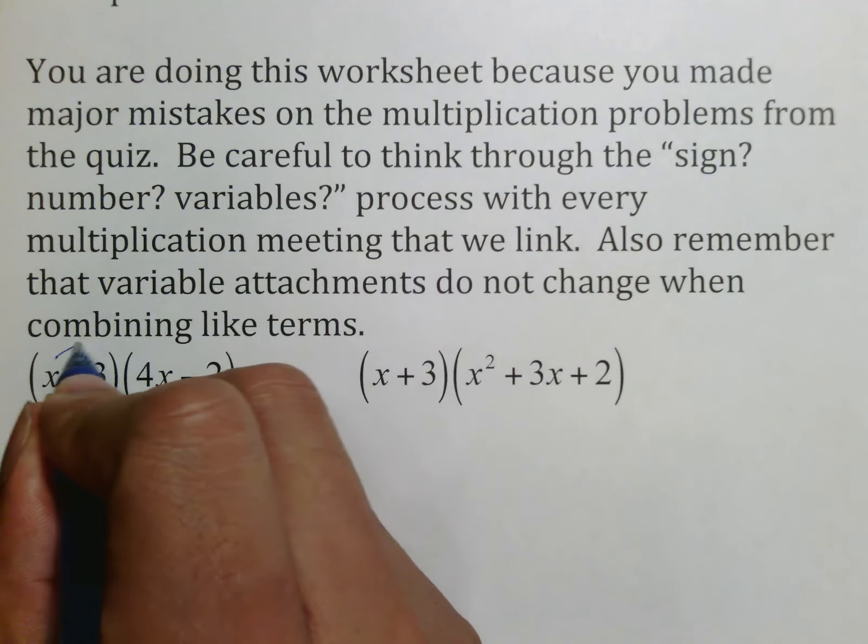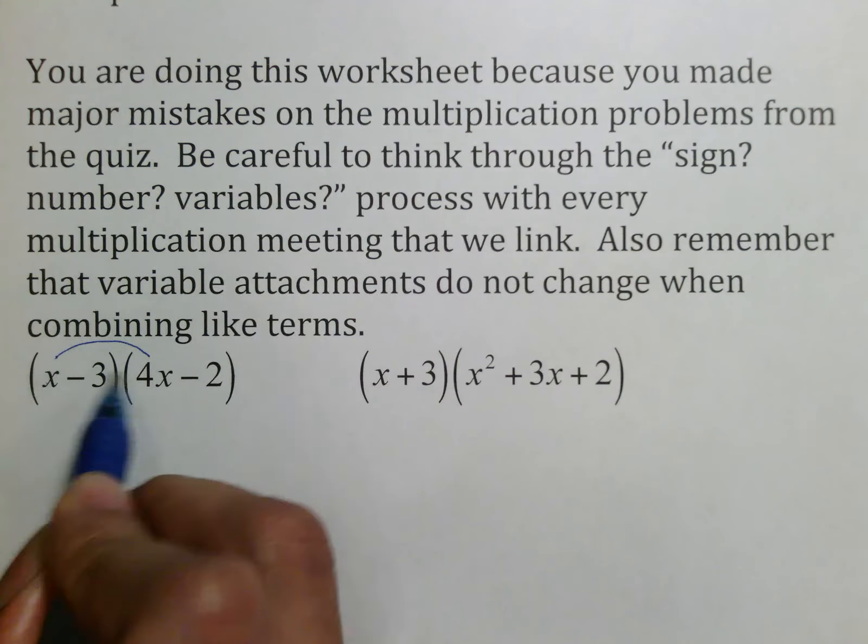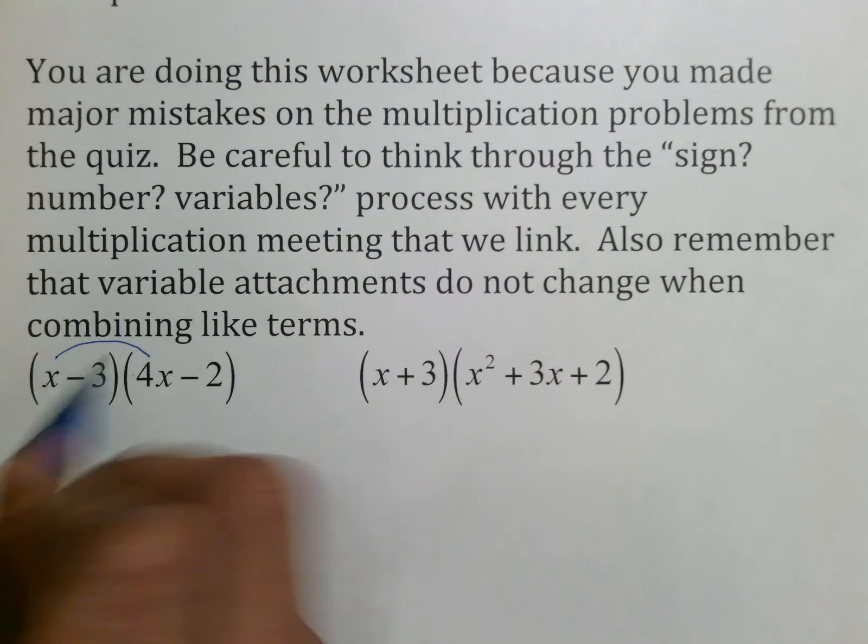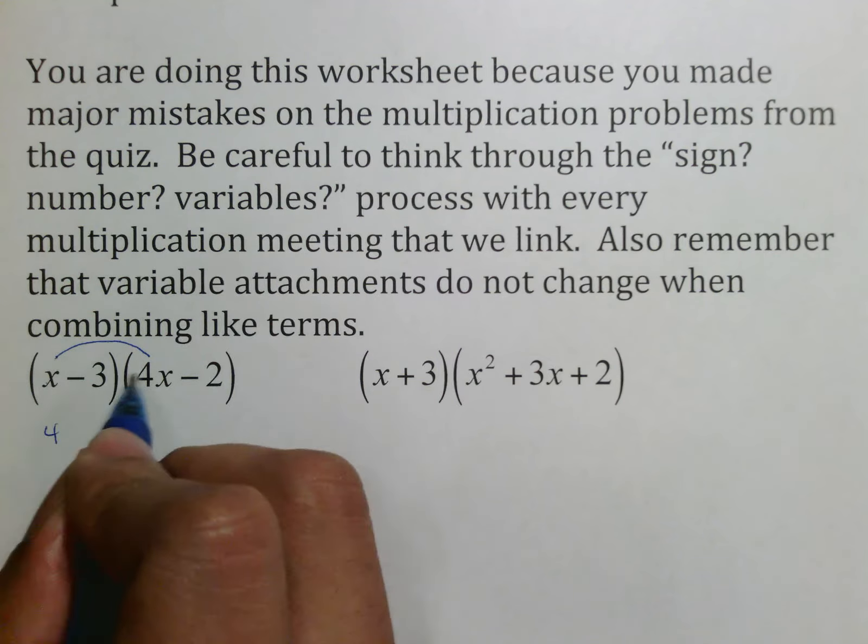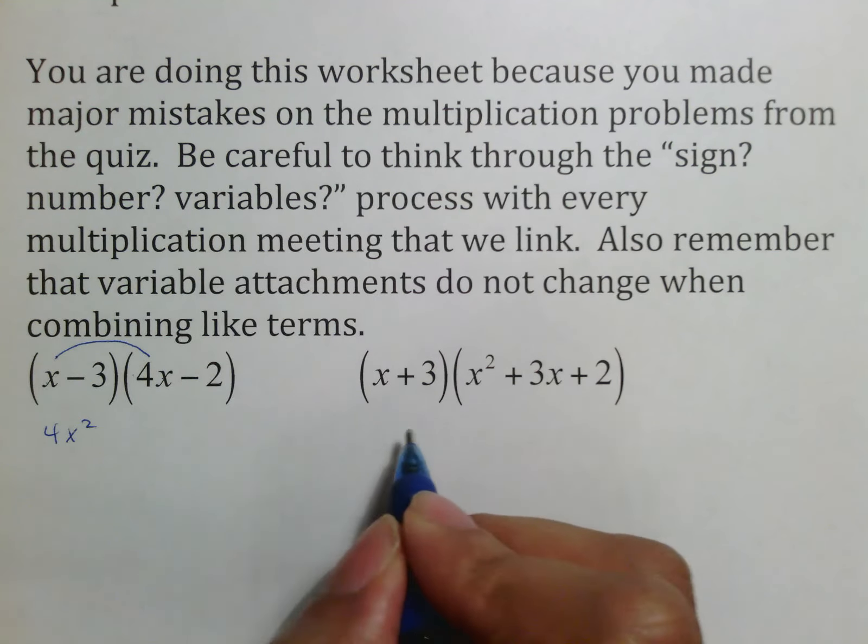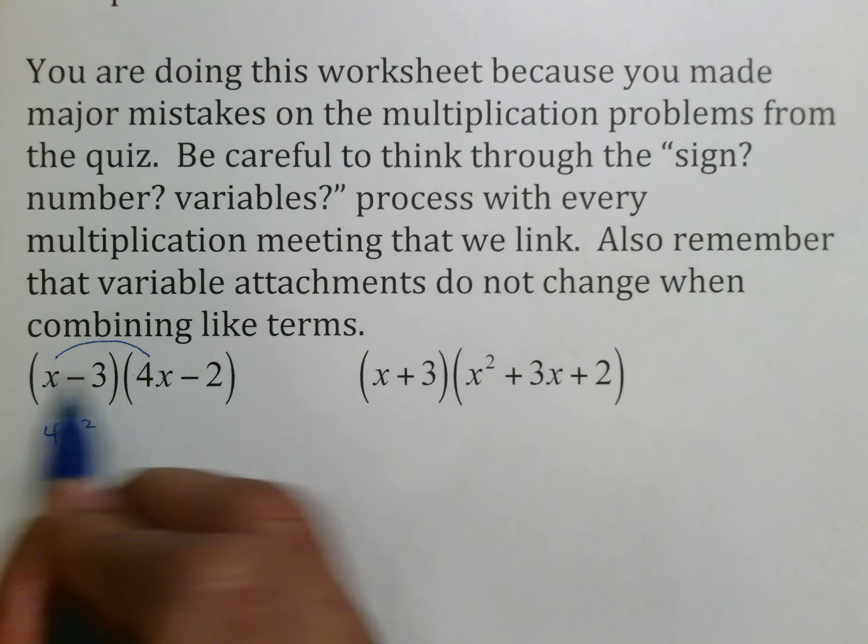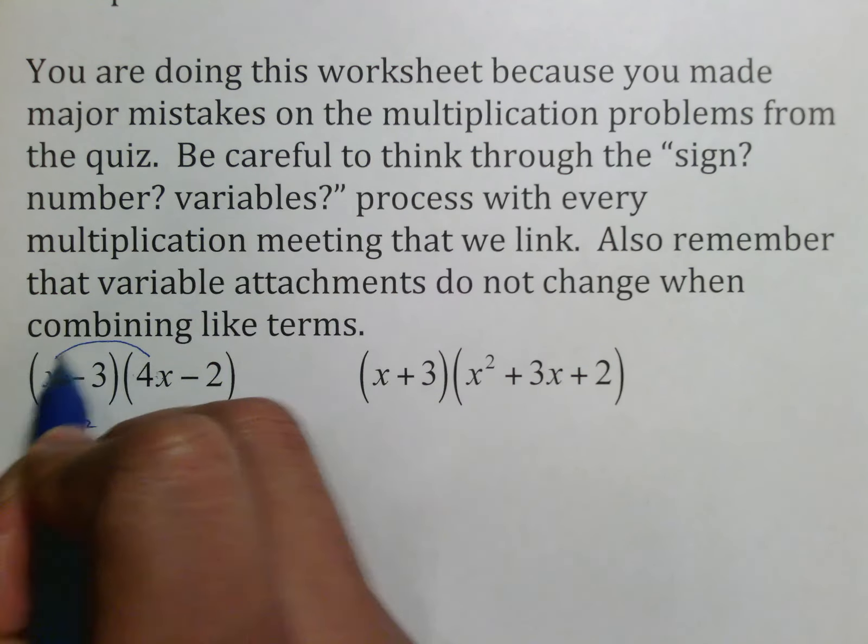But again, I need to see this work here. When I link these two up, the sign is positive. The only number here is four. And there's one, two x's, so it should be x squared. You have to go through that sign, positive, number, four. Variables, there are two x's here.